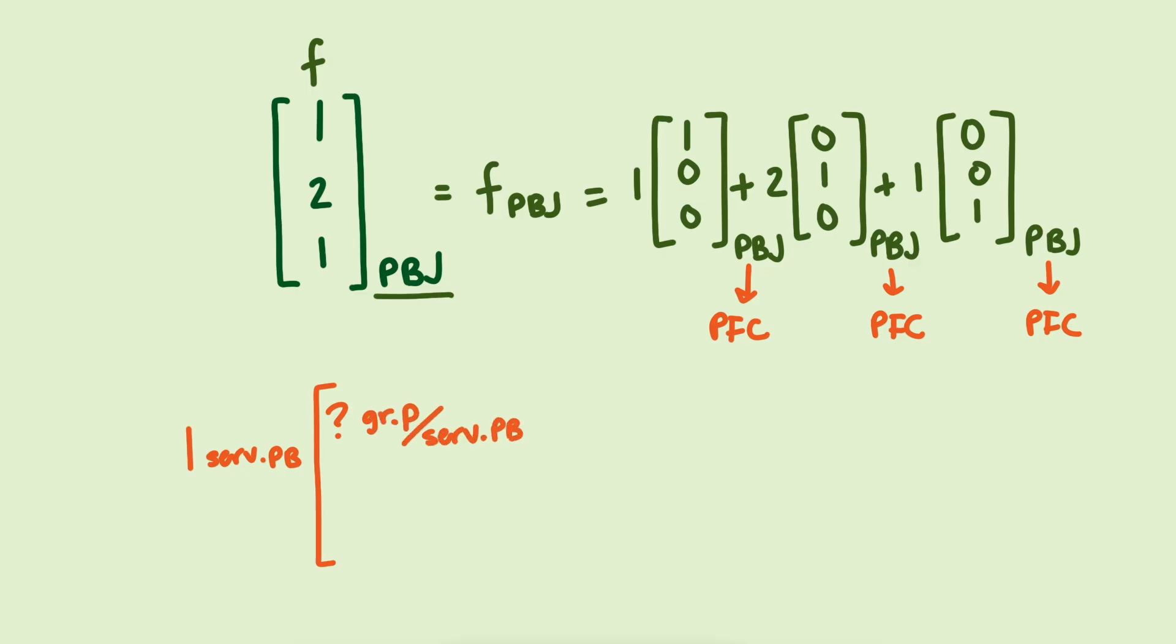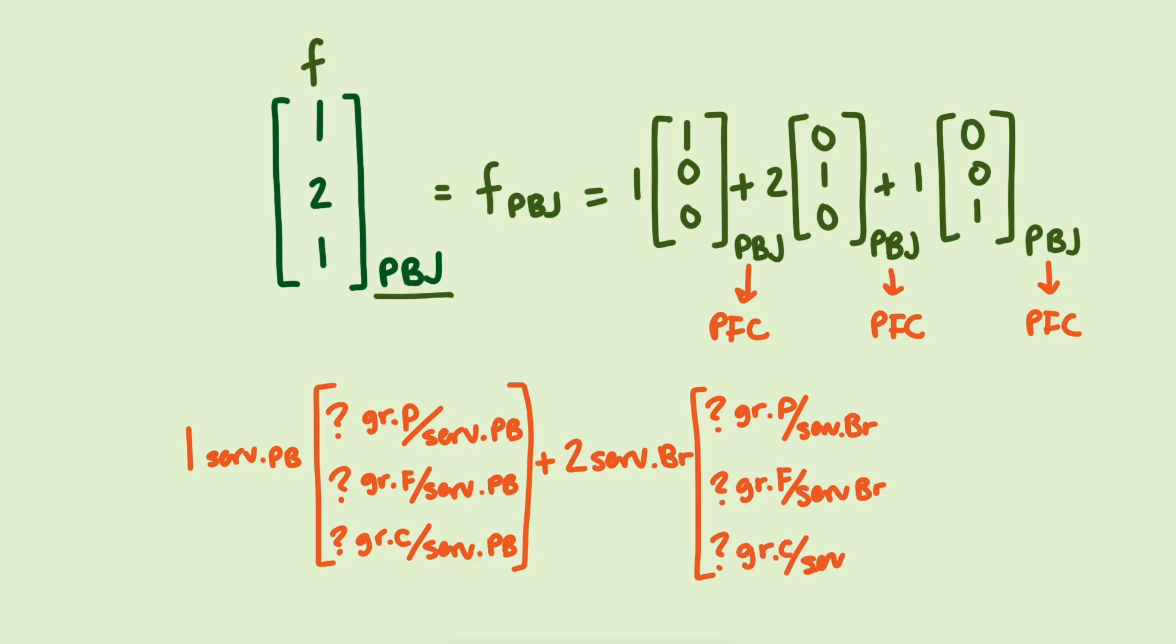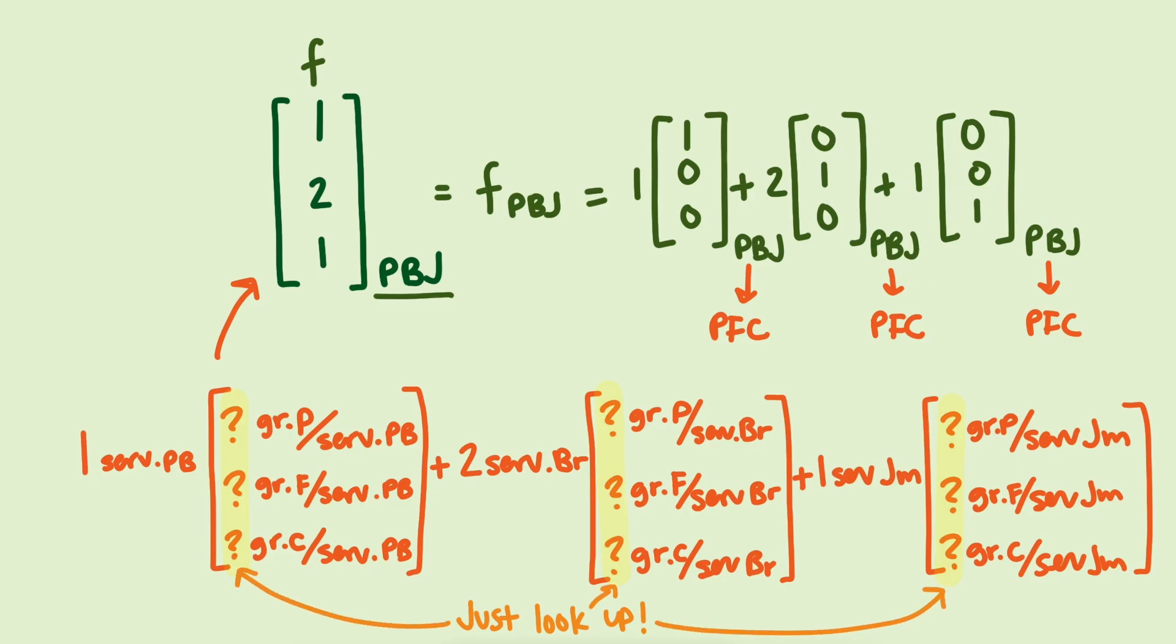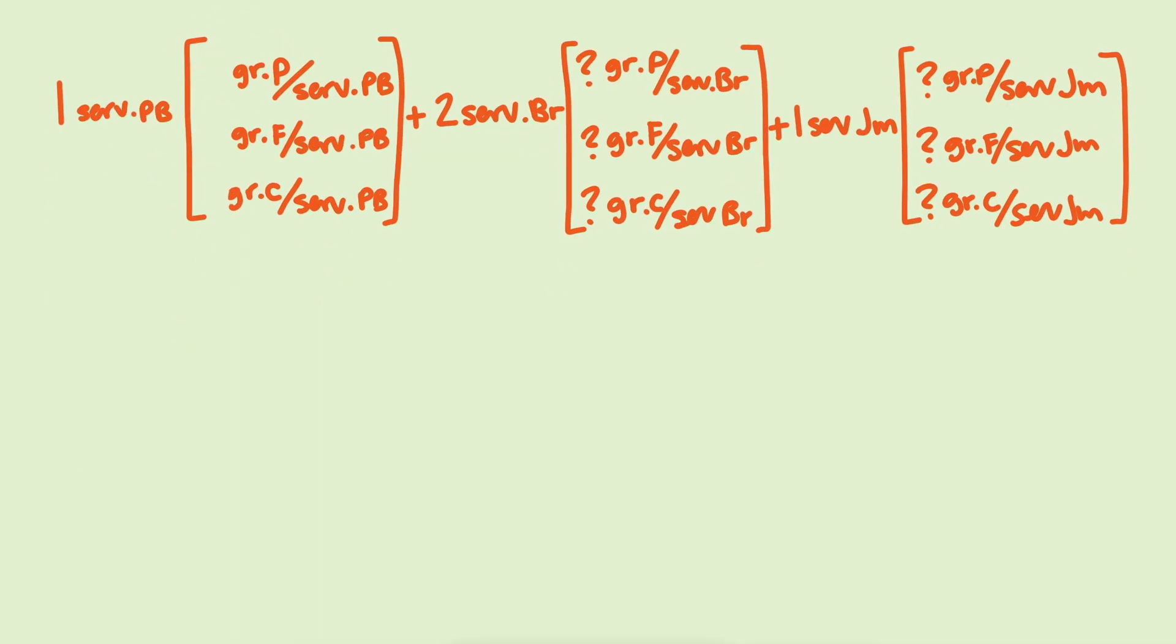If we put units on the coefficients, we see that the first one is one serving of peanut butter. But we need the product of that one serving of peanut butter times the vector to be a protein, fat, and carb vector. So the units in our PFC vector needs to be a vector of grams of protein per serving of peanut butter, grams of fat per serving of peanut butter, and grams of carbs per serving of peanut butter. That's the only way we can end up with the right units. Now finding the values to put in each of these vectors is relatively easy, since we can look up that information about how many grams of protein, fat, and carbs are in each serving of food from the nutritional label for each. Now we've created the linear combination that converts the vector 1-2-1 in PBJ coordinates to the equivalent vector in PFC coordinates.